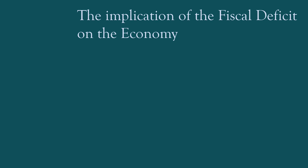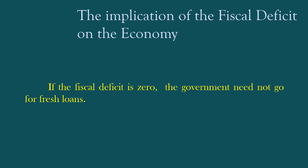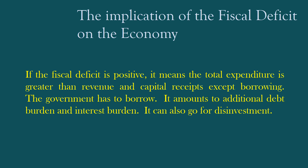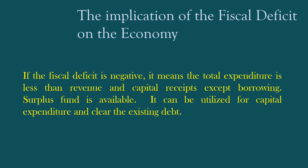If the Fiscal Deficit is zero, the government need not go for fresh loans. If the Fiscal Deficit is positive, it means total expenditure is greater than revenue and capital receipts except borrowing — the government has to borrow, adding to debt and interest burden; it can also go for disinvestment. If the Fiscal Deficit is negative, total expenditure is less than receipts, so surplus funds are available for capital expenditure and clearing existing debt.